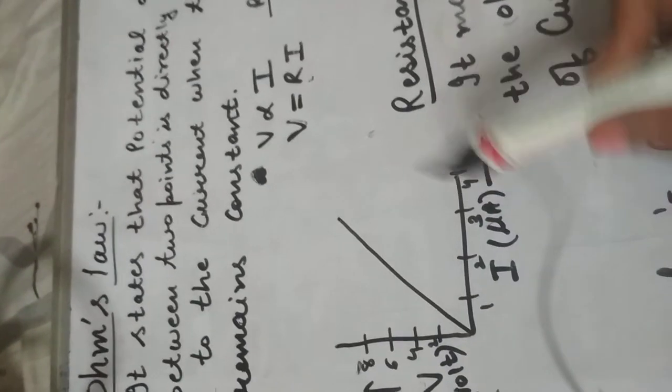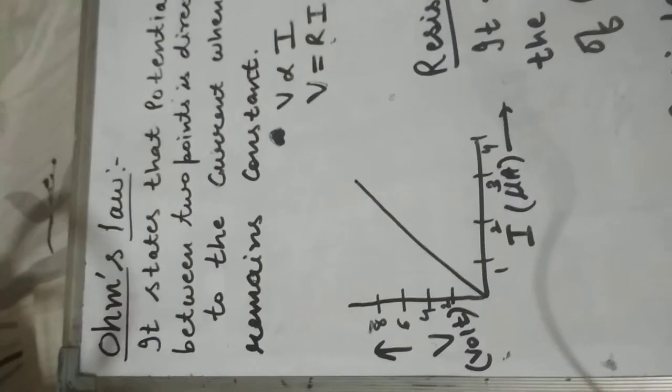तो अगर हम इसको graphical form में represent करते हैं, potential difference and current — we take current on the x-axis and potential difference on the y-axis.